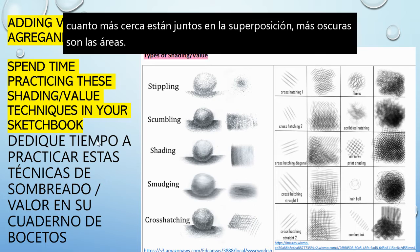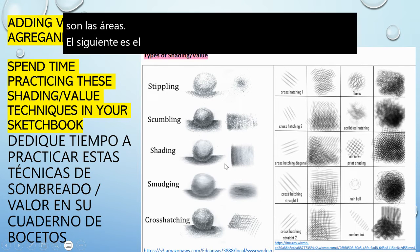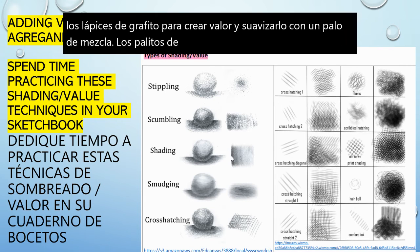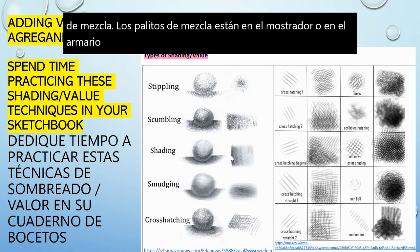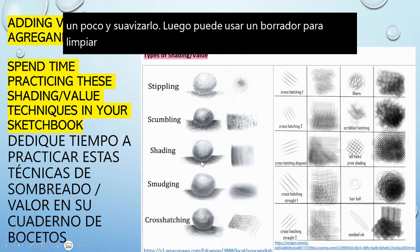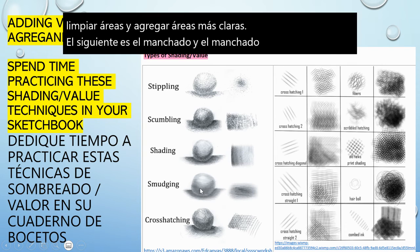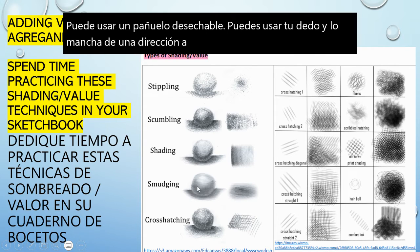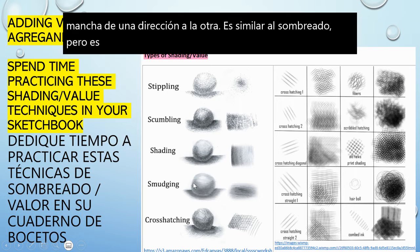The next one is shading — using the graphite pencils to create value and smoothing it with a blending stick. The blending sticks are over on the counter or up in the cupboard. They're just compressed paper that allows you to smear a little bit and smooth it. Then you can use an eraser to clean up areas and add lighter areas. Smudging is basically smearing — you can use a tissue or your finger, and it smears from one direction to the other. It's similar to shading but a bit more directional. You can also clean up your edges with an eraser.